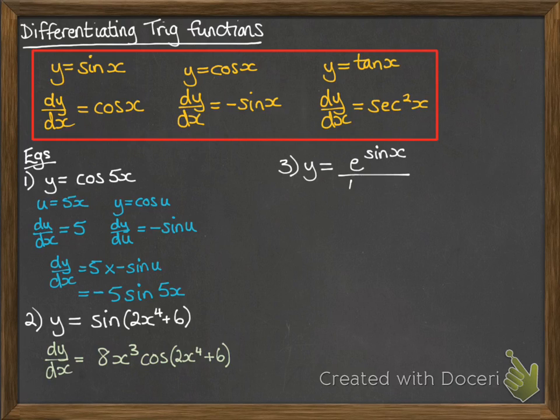Okay, y equals e to the sin x over tan x. I'm going to get a little complicated here. So u equals sin x, V equals tan x. And we're going to use the quotient rule.